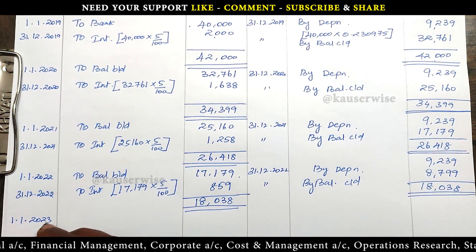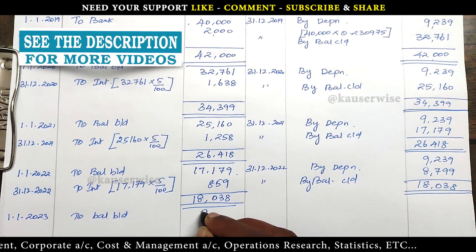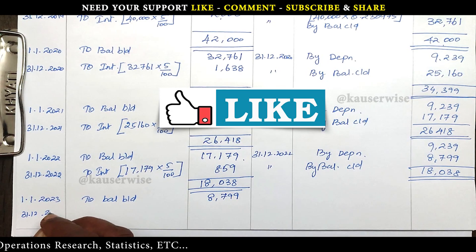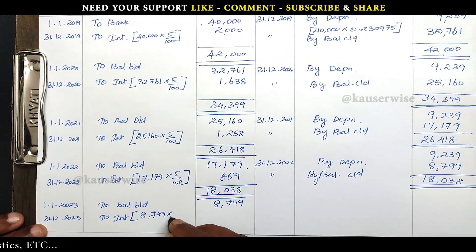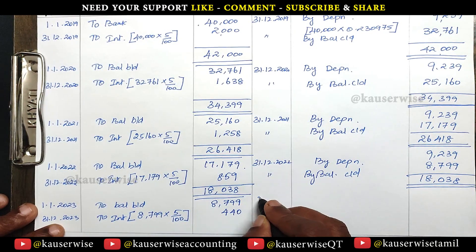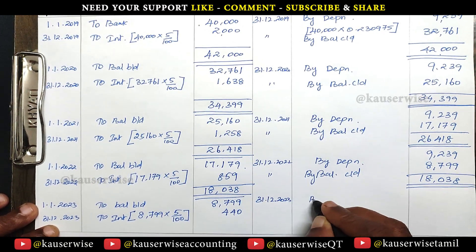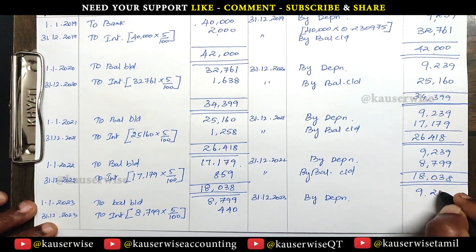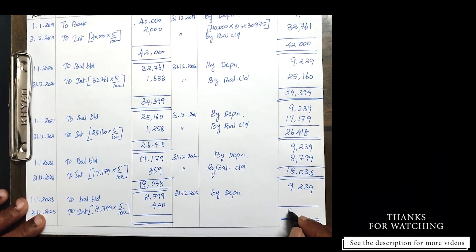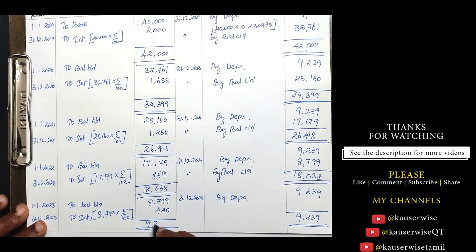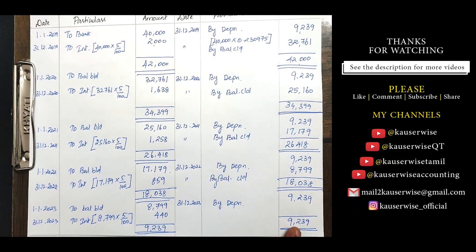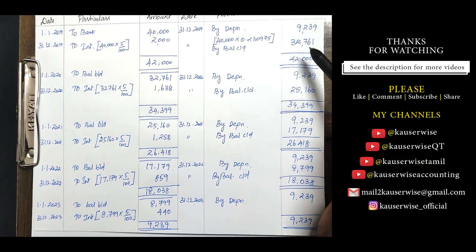On 1st January 2023, balance brought down: 8,799. At the end of the year, interest: 5% on 8,799 = rupees 440. By depreciation — same value — rupees 9,239. At the end of the fifth year you are not getting any balancing figure. So this is the way to prepare the lease account. According to the annuity method, you won't be getting any balancing figure, though sometimes you may get some residual value after the life of the asset.